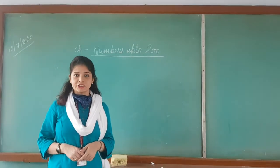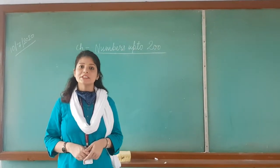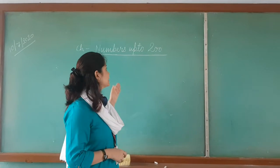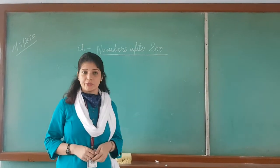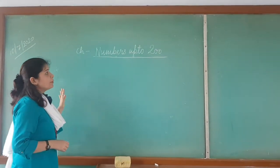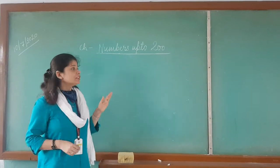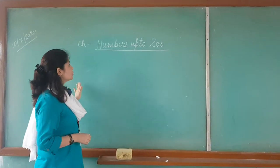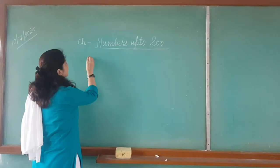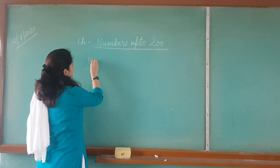We have already done with the subtraction chapter. Today we will start with a new chapter, that is numbers up to 200. Numbers up to 100 you all have done. What we are supposed to do first, we will start writing the numbers after 100.